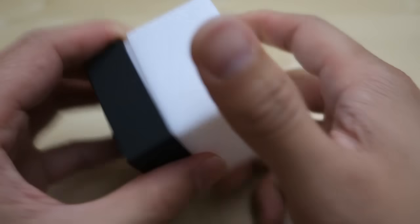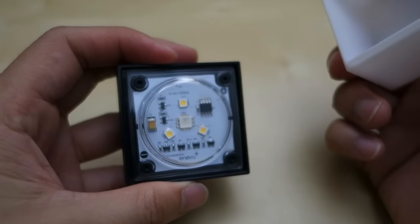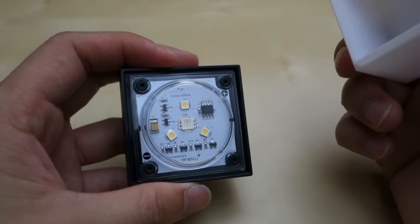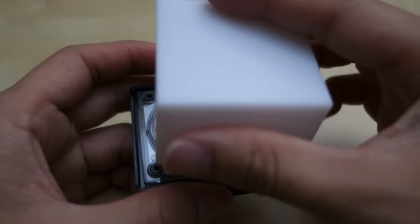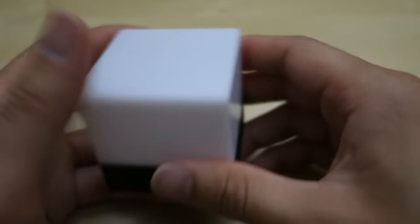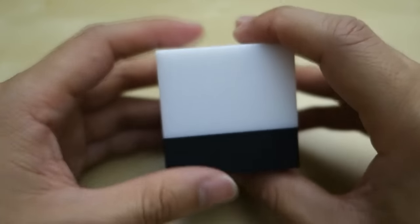The top part of the cube just comes right off like this. Now you can see some LEDs, three different LED colors, and those are the ones that make the different color combinations. Just close it back down like that and that's your cube. Let me demonstrate for you here.